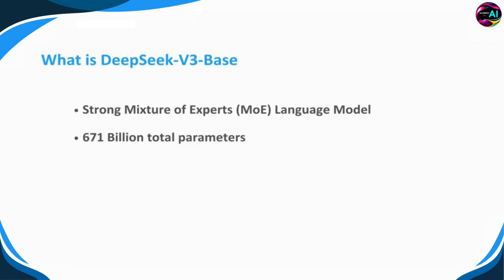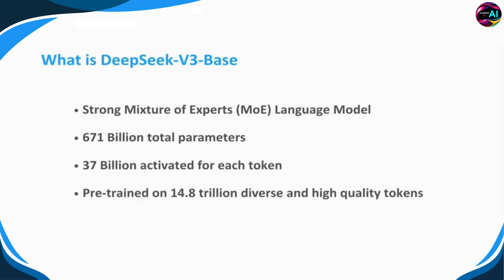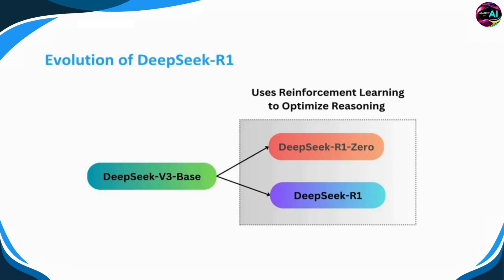DeepSeek V3 base is truly massive, with 671 billion parameters, making it one of the largest models available today. For each token, 37 billion parameters are activated, representing the small subset of specifically trained experts to generate the most accurate response. The model was pre-trained on an impressive 14.8 trillion diverse and high-quality tokens, giving it a strong foundation for advanced reasoning and understanding. Let's dive into the evolution of DeepSeek R1.